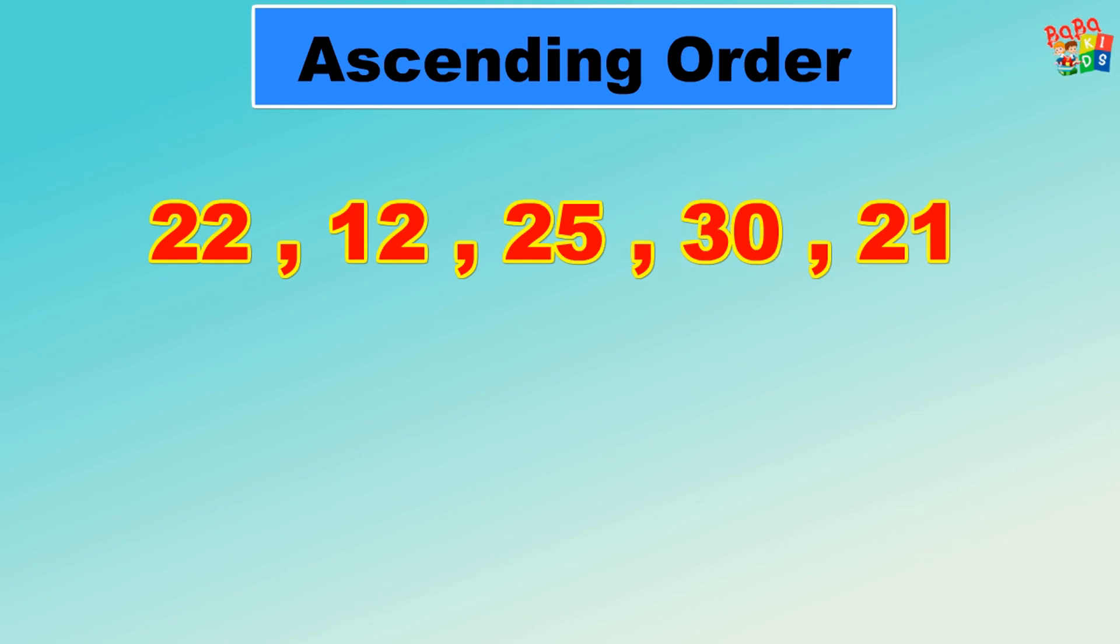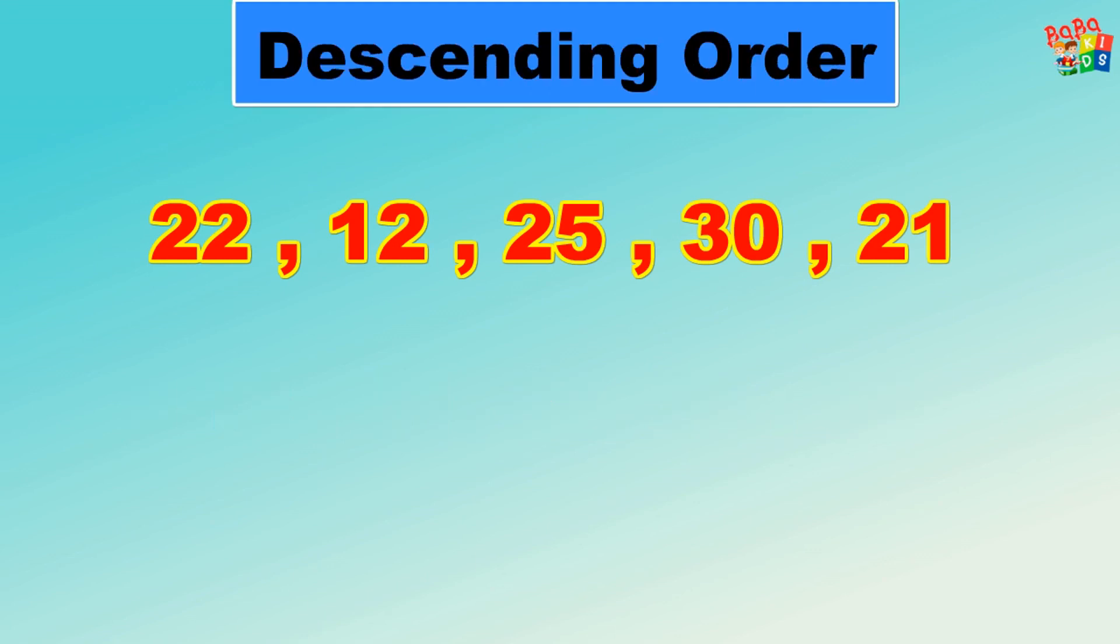Now ascending order is 12, 21, 22, 25, and 30. Now descending order, same numbers like this: 22, 12, 25, 30, and 21.